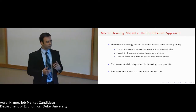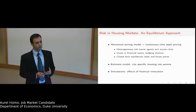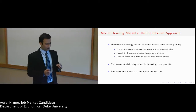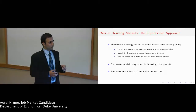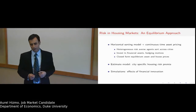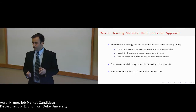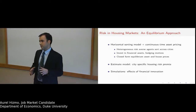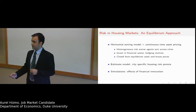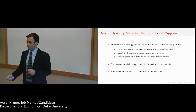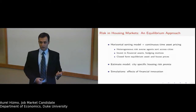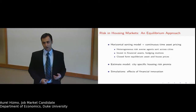What these horizontal sorting models do is they study the location decisions of heterogeneous agents across space. Agents here choose to locate within a system of cities based on the income they receive in each particular city and the amenities that they get from living there.